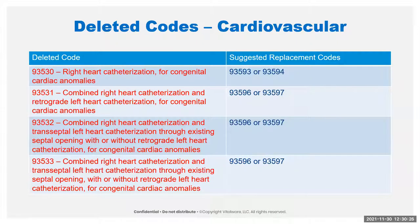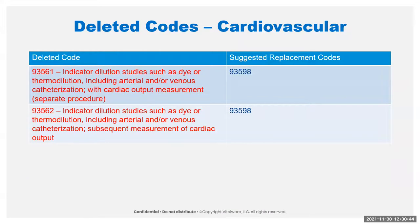Here are our deleted codes with their suggested replacements. Right heart catheterization used to be pretty simple — we now have two codes for normal and abnormal anatomy, so basically everything has been split into two. The indicator dilution studies have been compressed into one new code, 93598.